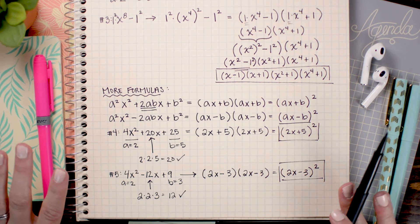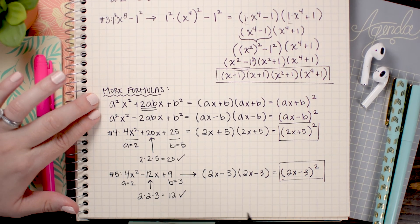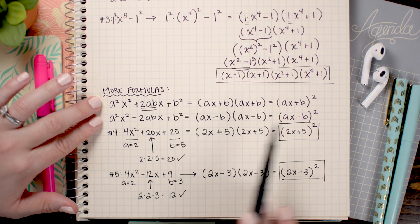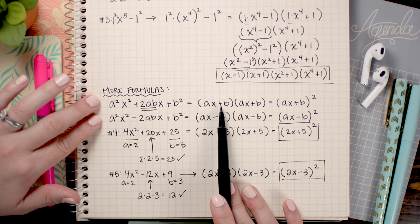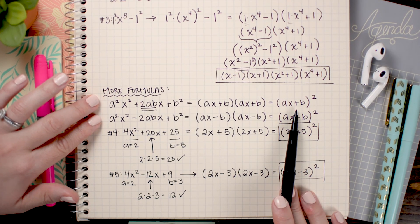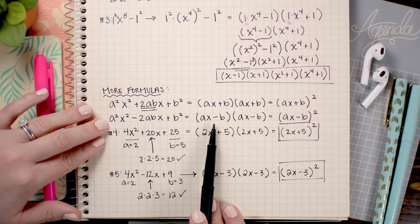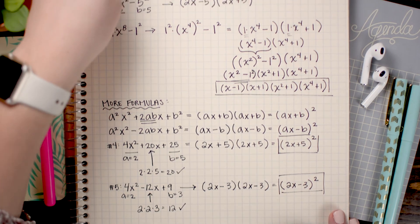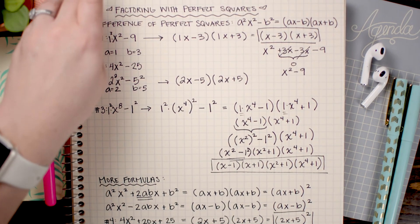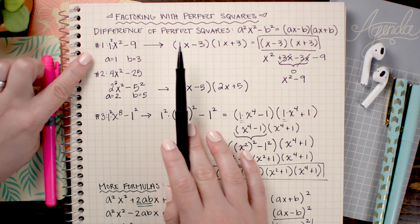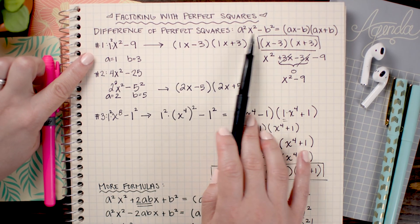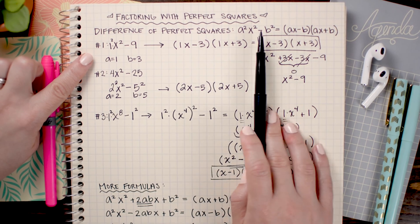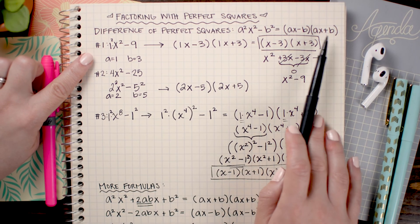The hardest part about any of these problems is simply remembering the formulas. You have two trinomial formulas which are nearly identical: if you have a plus sign in the middle, it translates to a plus sign in your binomial; if you have a minus sign in the middle, that translates to a minus sign in your binomial. And don't forget the difference of perfect squares formula: if you have a perfect square minus another perfect square, you can factor it into the square roots subtracted and added.